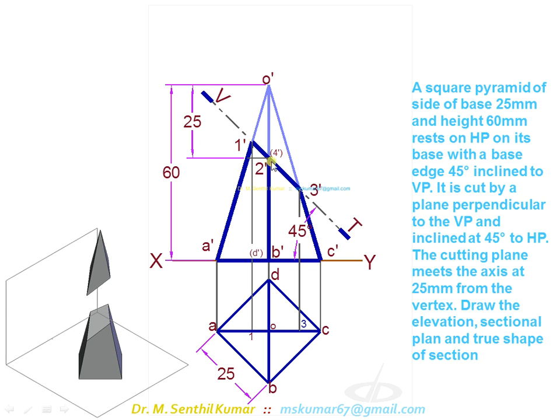Transfer this point from this slant edge to slant edge o'a' by drawing a horizontal line. For example, let's see about 2'. Draw from 2', draw horizontal line, transfer this point. Now 21' is on o'a'. Now try to get this 21 on oa by drawing a projector.